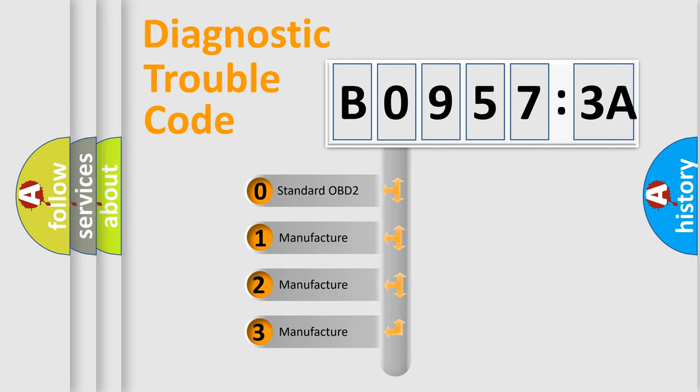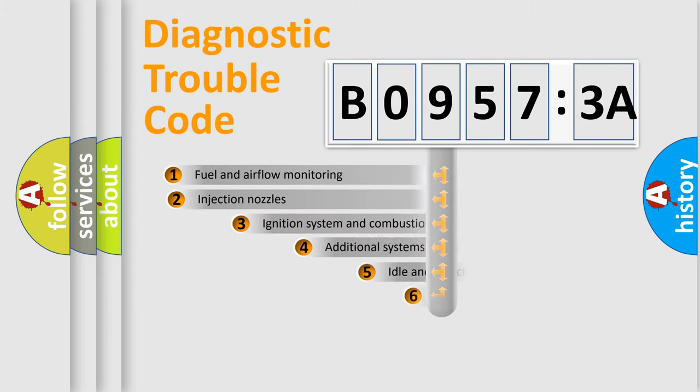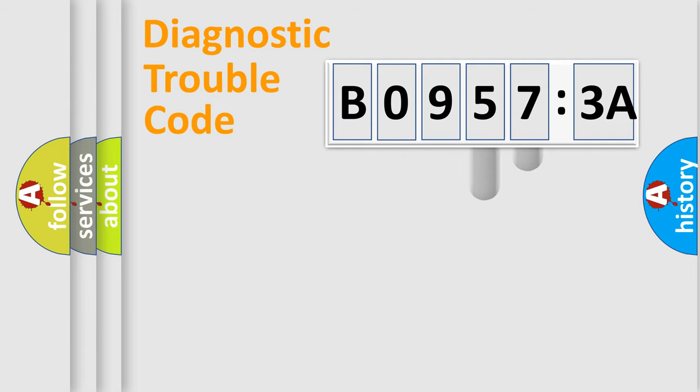If the second character is expressed as zero, it is a standardized error. In the case of numbers 1, 2, 3, it is a more prestigious expression of the car-specific error. The third character specifies a subset of errors. The distribution shown is valid only for the standardized DTC code. Only the last two characters define the specific fault of the group.